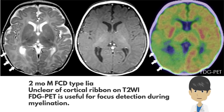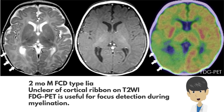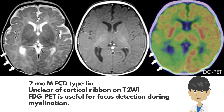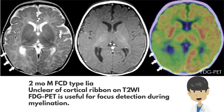A case of focal cortical dysplasia type 2a is shown. This is a two-month-old boy who is in the process of myelination in the brain. The T2-weighted image shows an indistinct appearance of the cortical ribbon from the right temporal lobe to the occipital lobe. FDG PET shows widespread hypometabolism in the same area.